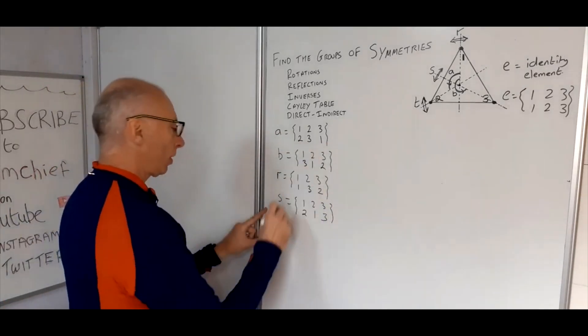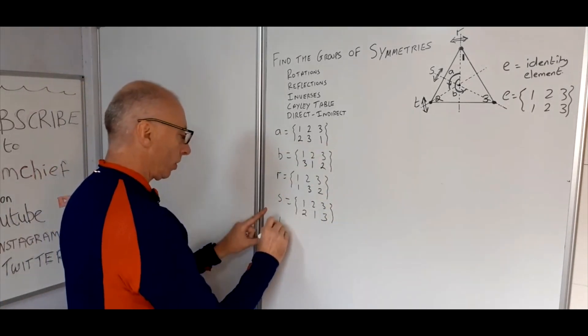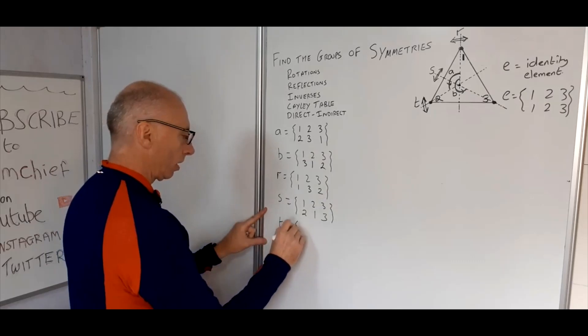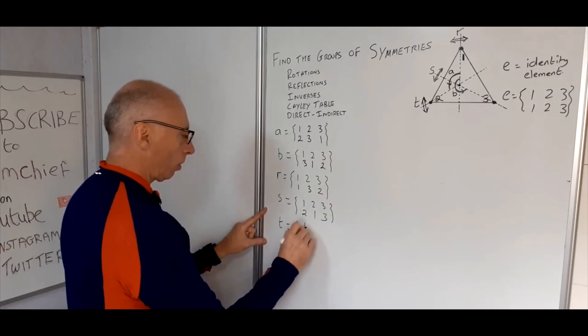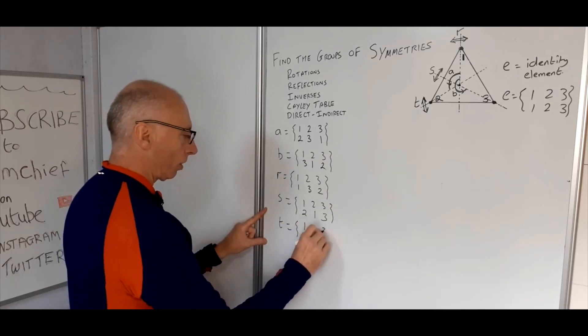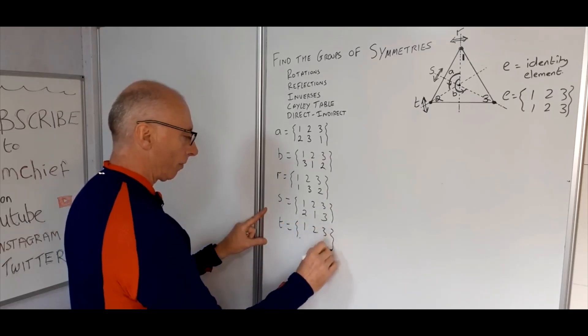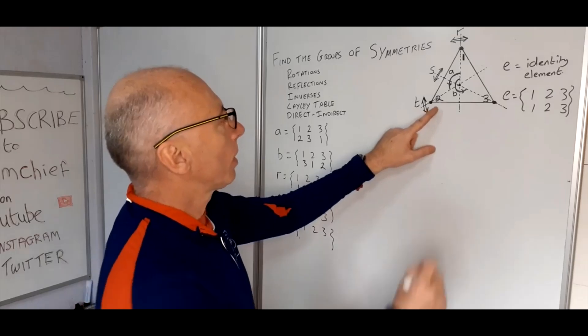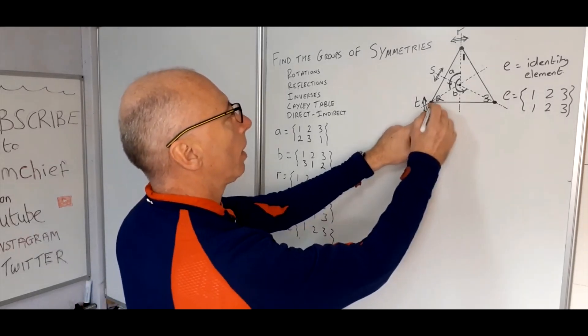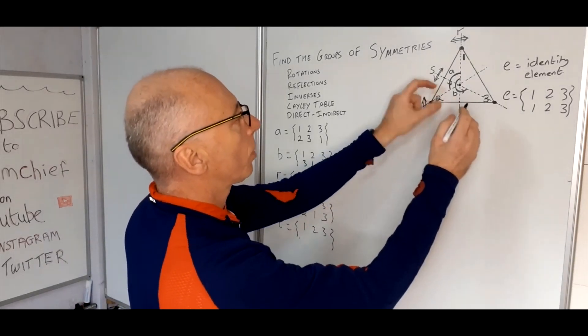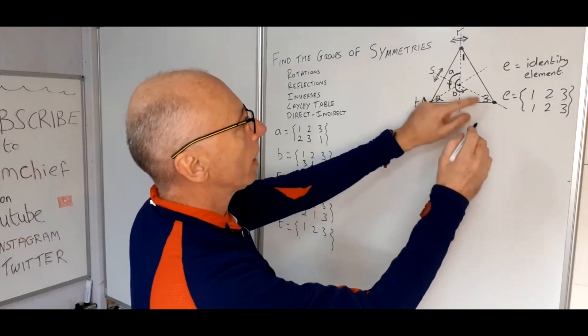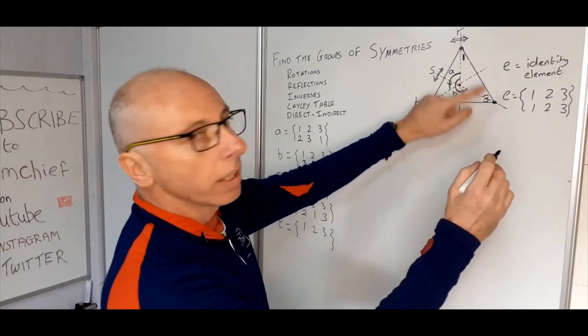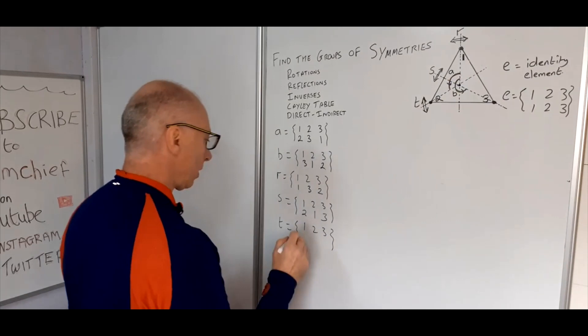And then the last reflection is T, with starting points one, two and three. Two is going to stay, and one and three are going to change places.